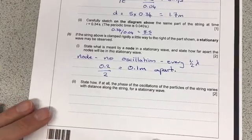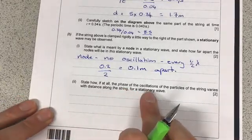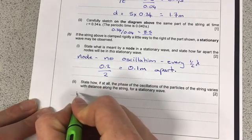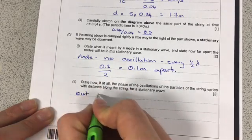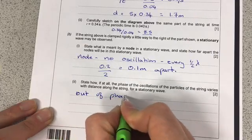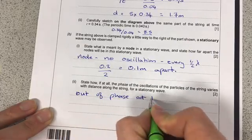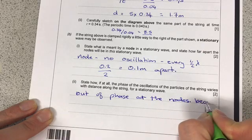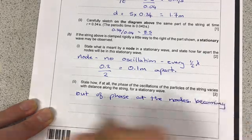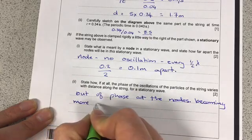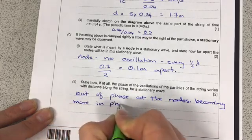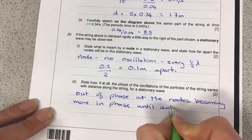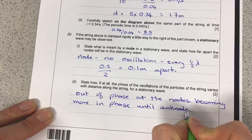And then it says, state how, if at all, the phase of the oscillations of the particles and the string vary. Well, we'll start with out of phase at the nodes, becoming more in phase. Sounds bad language, doesn't it? More in phase until anti-node reached.